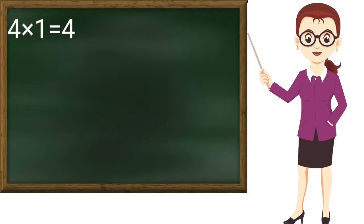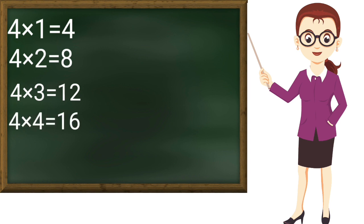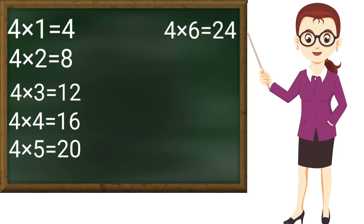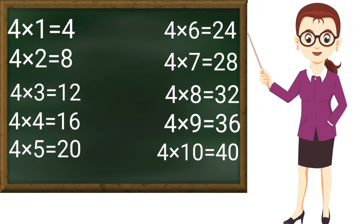4 ones are 4, 4 twos are 8, 4 threes are 12, 4 fours are 16, 4 fives are 20, 4 sixes are 24, 4 sevens are 28, 4 eights are 32, 4 nines are 36, 4 tens are 40. Thank you teacher.